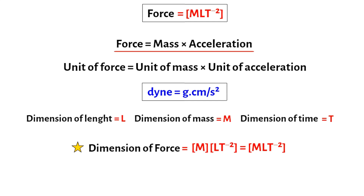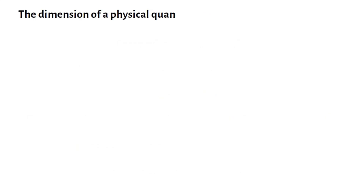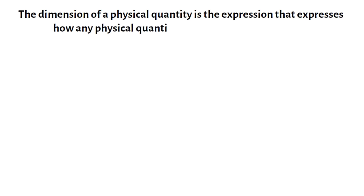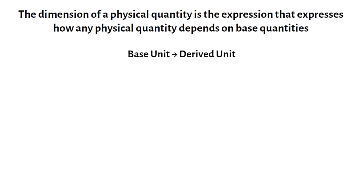This is the dimension of force, which clearly shows how force as a physical quantity depends on the base quantities. So the nature of a physical quantity is also described by its dimensions. In general, the dimension of a physical quantity is the expression that expresses how any physical quantity depends on base quantities. Once this dimension is known, the relationship of the base units to any derived unit can easily be determined. All physical quantities can be expressed in terms of some combination of seven fundamental or base quantities. We shall call these base quantities as the seven dimensions of the physical world.